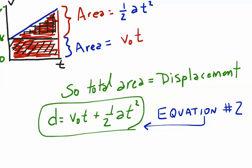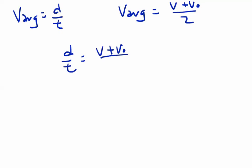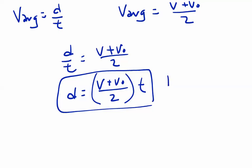The area of the triangle is one-half at squared and the area of the rectangle is v-naught times t. Since total area equals displacement, adding those gives us equation number two: d equals v-naught t plus one-half at squared. To get equation number three, we look at average velocity. The average velocity equals displacement over time, and for constant acceleration we can also find it as (v plus v-naught) divided by two. Setting these equal and multiplying both sides by t gives equation three: d equals (v plus v-naught) over two, times t.